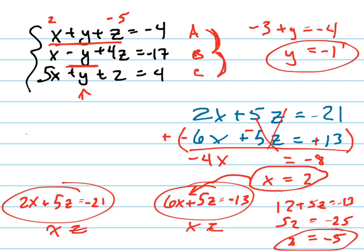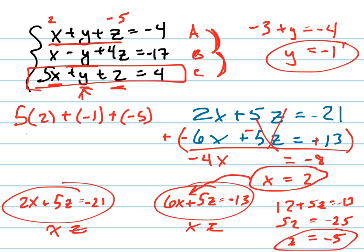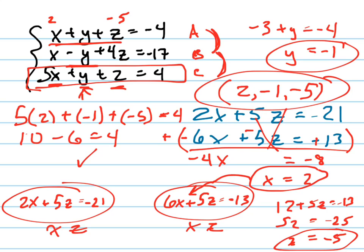And now to check to make sure you did it right, plug in. Let's just take this more difficult one. 5 times 2 plus negative 1 plus negative 5. Notice I just plugged in X, Y, and Z for those things. And that better equal 4. Let's see if it does. 10 minus 6 equals 4. Yeah. So that works. So my solution is 2 comma negative 1 comma negative 5. That's how you do that problem.